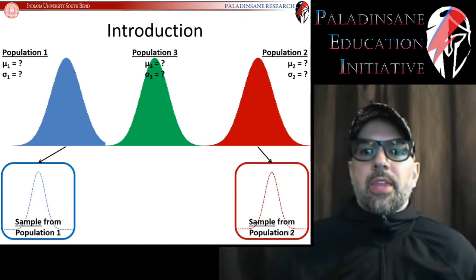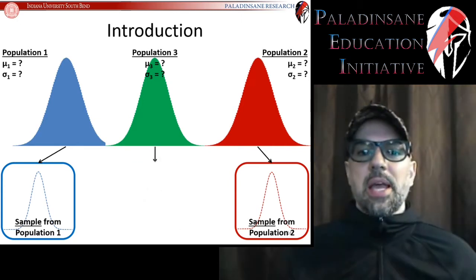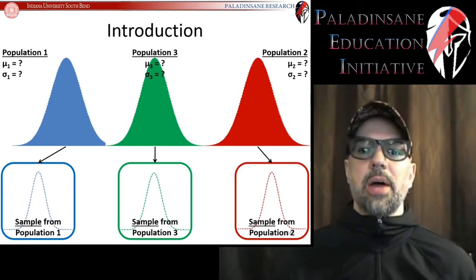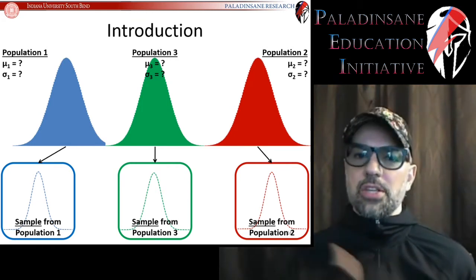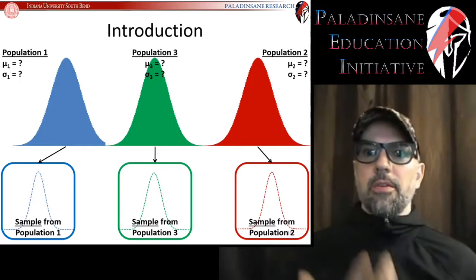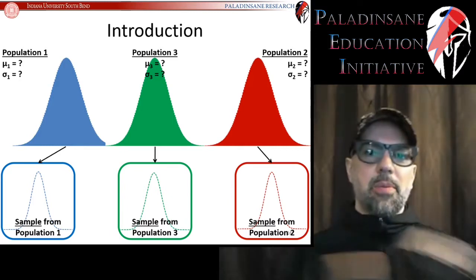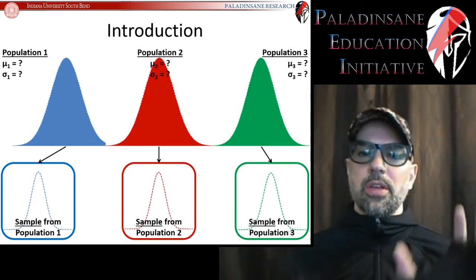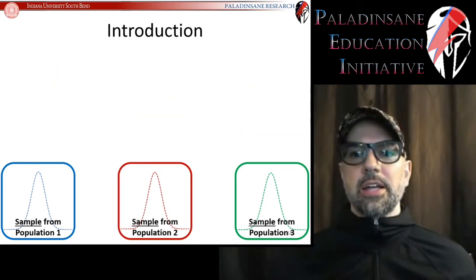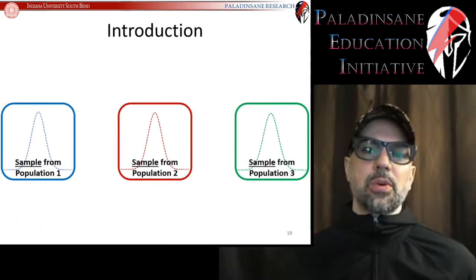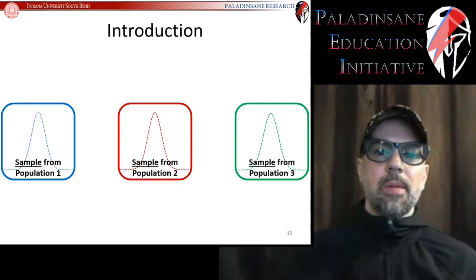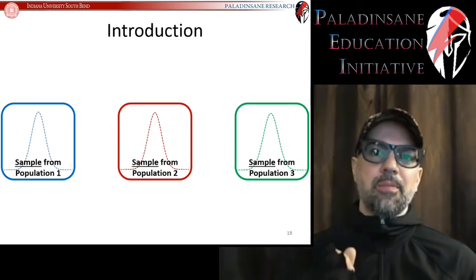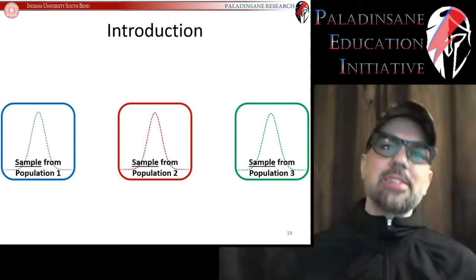With three populations, we would take a sample from each one. But what we're going to show is what is incorrect to do — what can lead to, and has led to, incorrect conclusions that have harmed people and harmed psychology. Our human minds often look for solutions using tools we already have, so you might think: I would just do multiple t-tests on every single pair combination. As it turns out, that is wrong. There is a serious problem doing it that way.